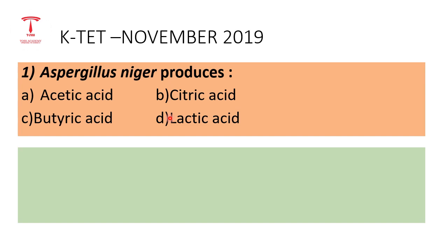The correct answer is Option B: Citric Acid. Aspergillus niger is a fungus, and this falls under the topic of Biotechnology. Aspergillus niger produces Citric Acid.